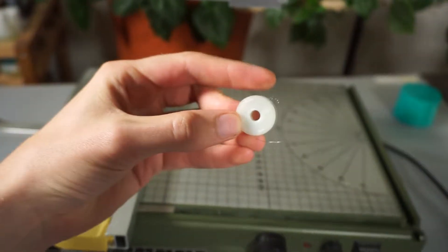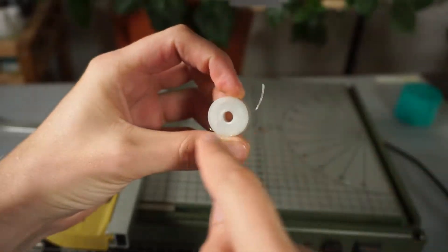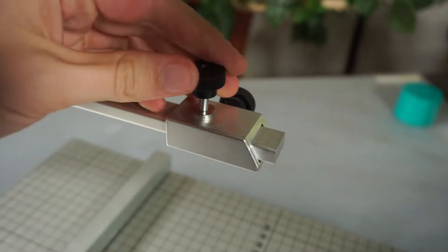So first take your wire like this so that it forms like a six and then locate this screw on top here.